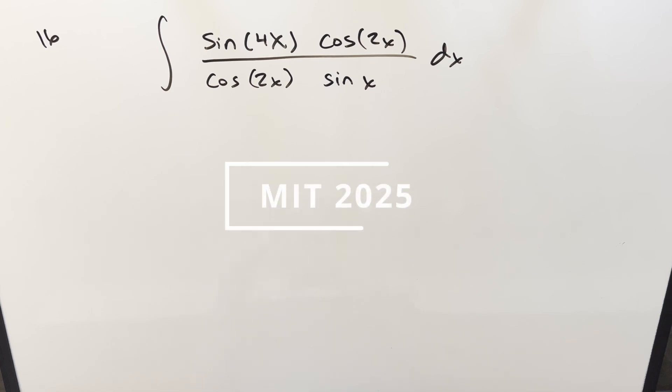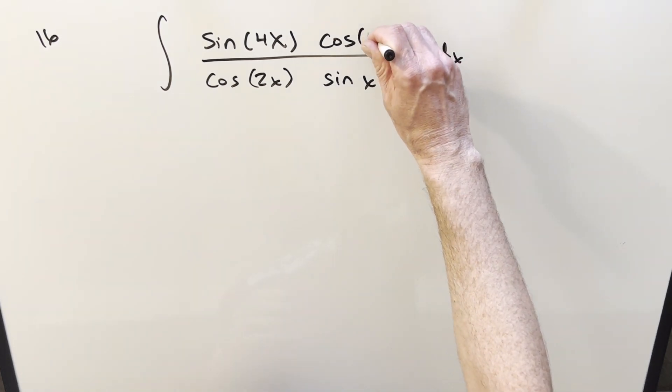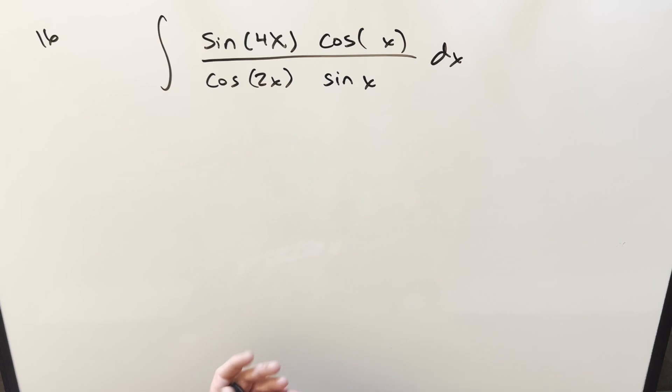Okay, we have here another integral from MIT 2025, problem 16. We have the integral sine 4x cosine of x. Let's get rid of that. Cosine of x over cosine 2x sine x dx.